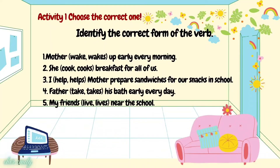Now let's have an activity. Activity 1: Choose the correct form of the verb. Number 1: Mother wake/wakes up early every morning. Number 2: She cook/cooks breakfast for all of us. Number 3: I help/helps mother prepare sandwiches for our snacks in school. Number 4: Father takes his bath early every day. And number 5: My friends live/lives near the school.